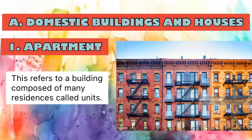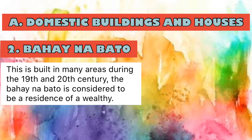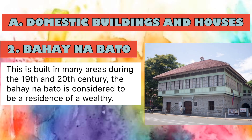Most units of condominiums can be used as residences, but are also used as business and commercial spaces. Next, we have Bahay na Bato, which was built in many areas during the 19th and 20th centuries. The Bahay na Bato is considered to be a residence of the wealthy. A typical two-story Bahay na Bato generally has a ground floor made of brick or stone, with a wooden upper level. The windows have grills, while the upper level has sliding shutters, and the roof slants on four sides. There are still many Bahay na Bato in the country today.